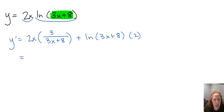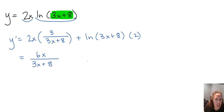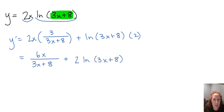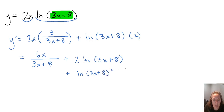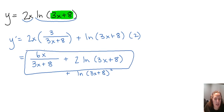Combining a little bit here, 2x times 3 gives us 6x in the numerator and 3x plus 8 in the denominator on the first term, and then 2 times the natural log of 3x plus 8 on the second. Sometimes you'll see that written using the power rule as the quantity 3x plus 8 squared, but the first form is just fine.